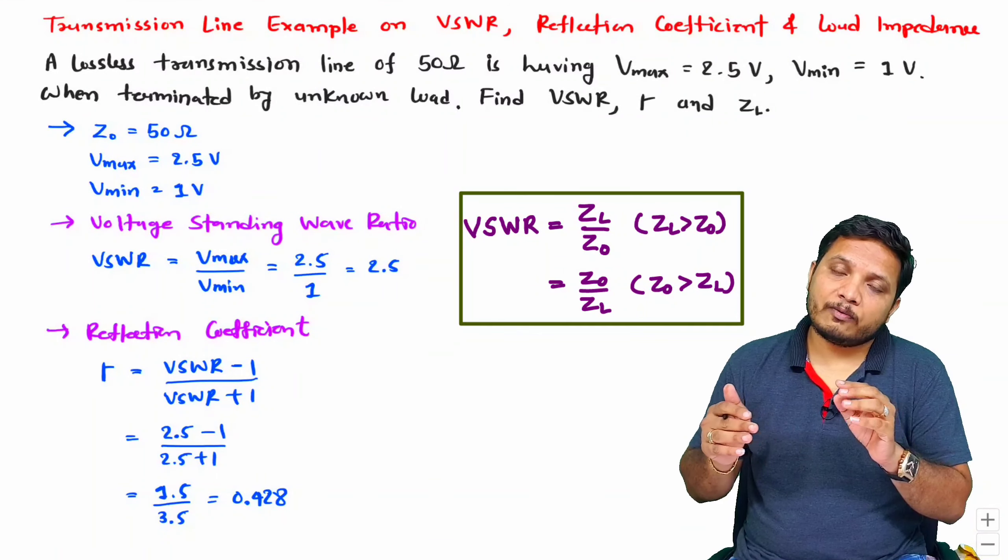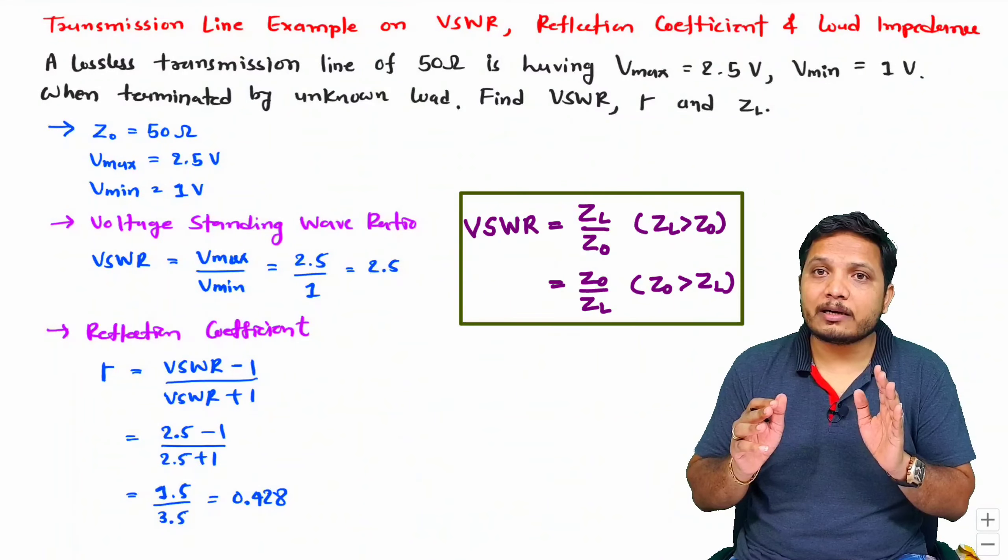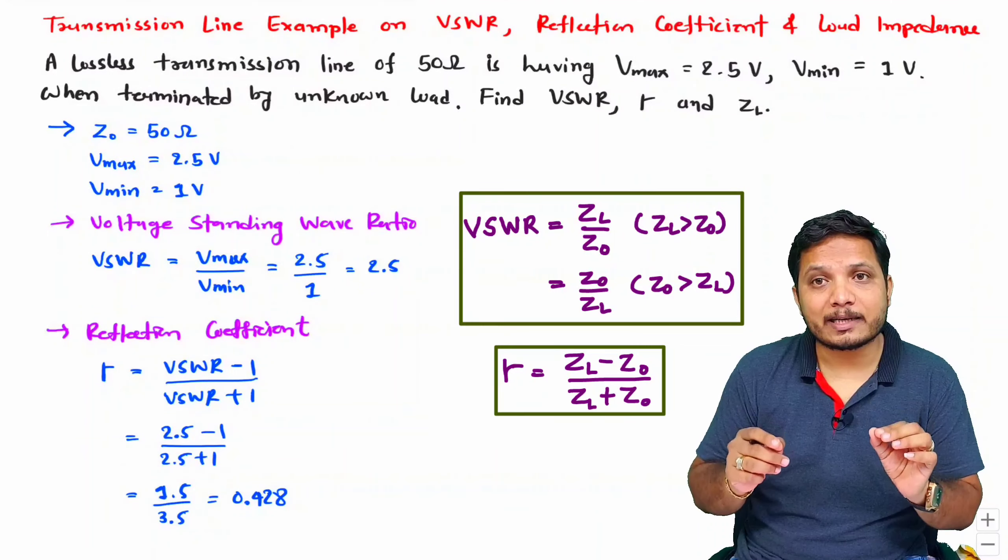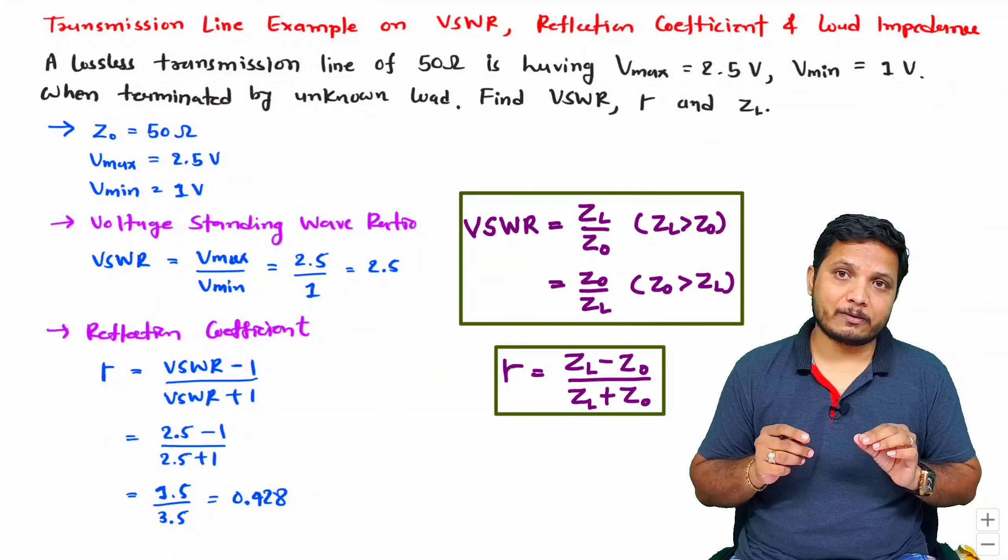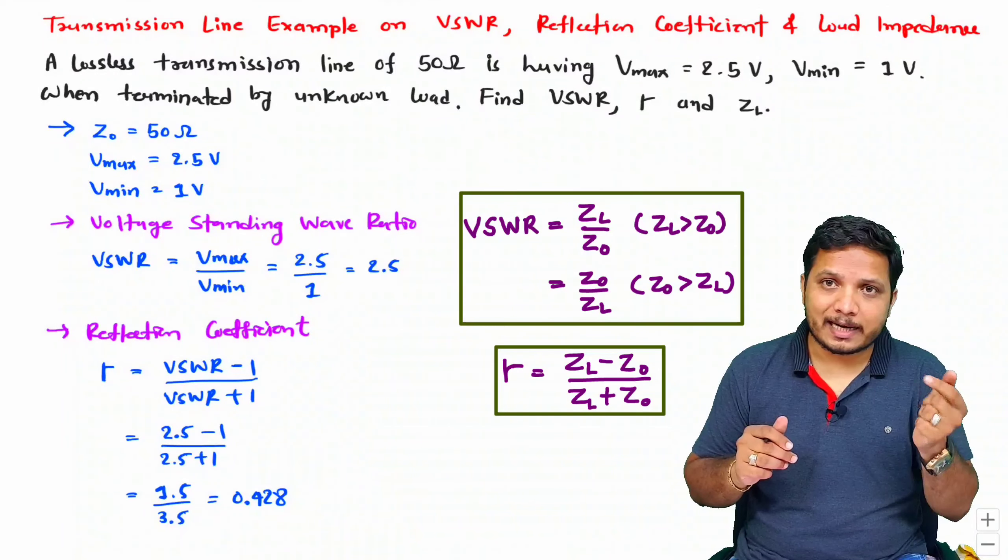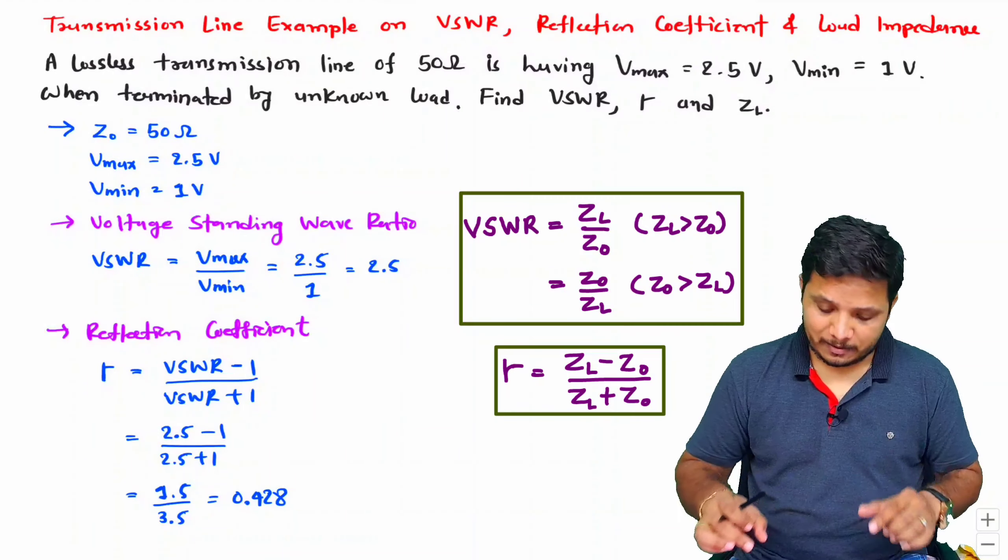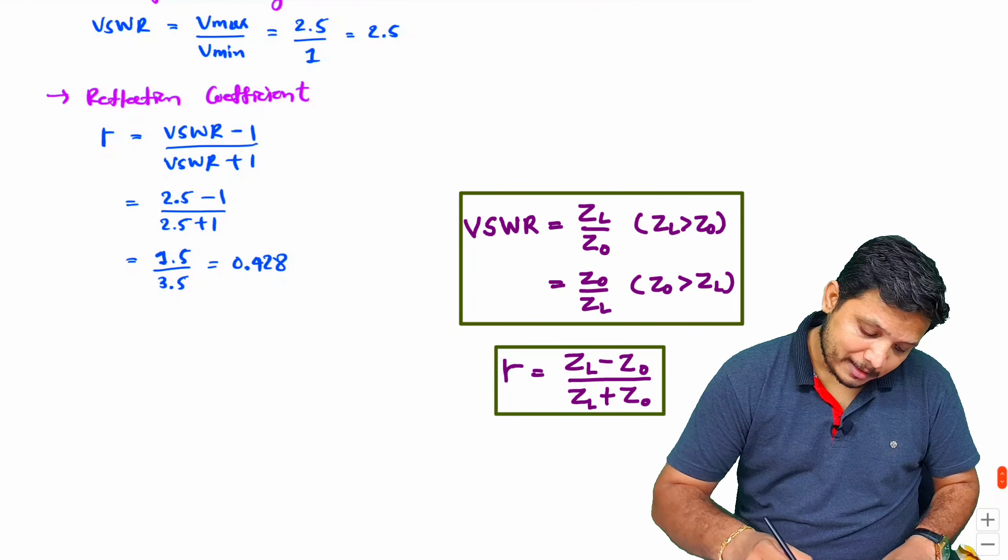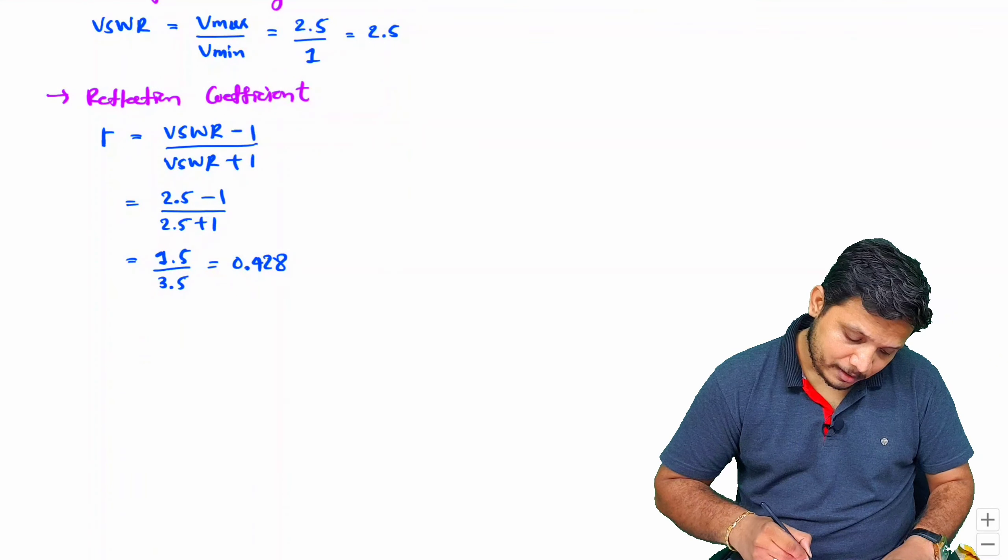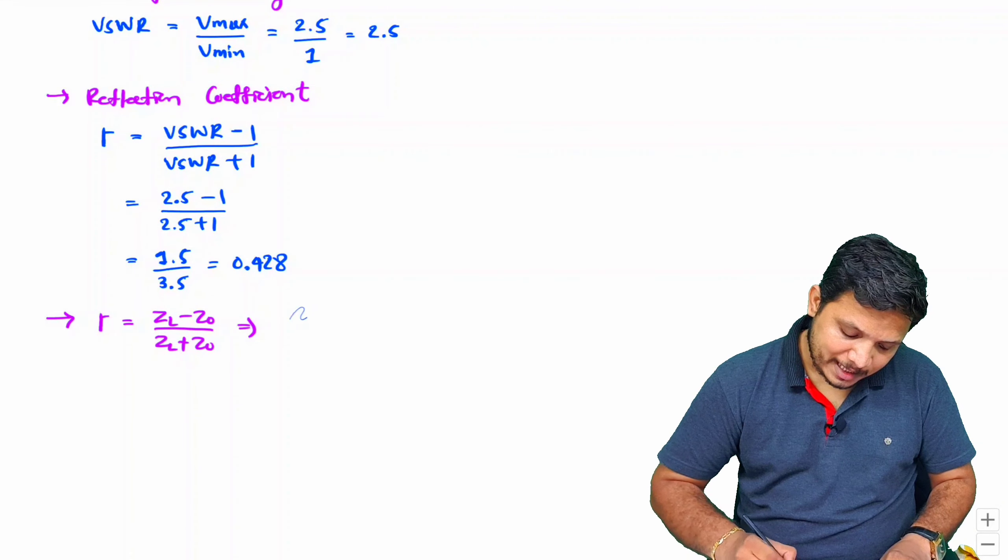For calculation of ZL based on reflection coefficient, we use reflection coefficient equals ZL minus Z0 divided by ZL plus Z0. We have reflection coefficient as well as Z0, so we can identify the unknown quantity ZL. I will be using the reflection coefficient formula.